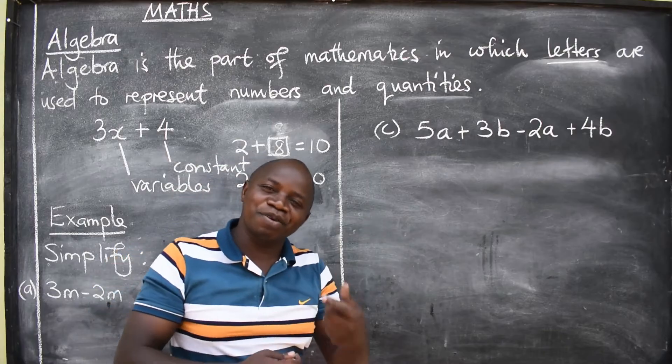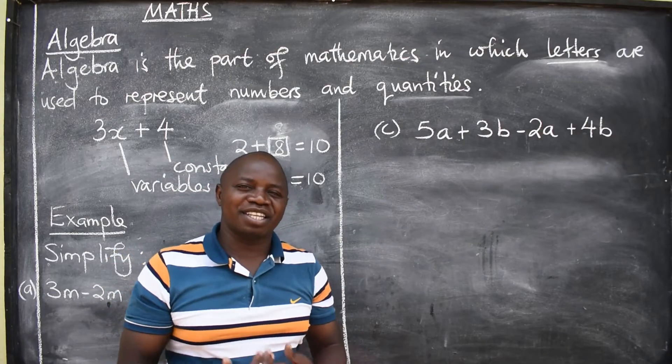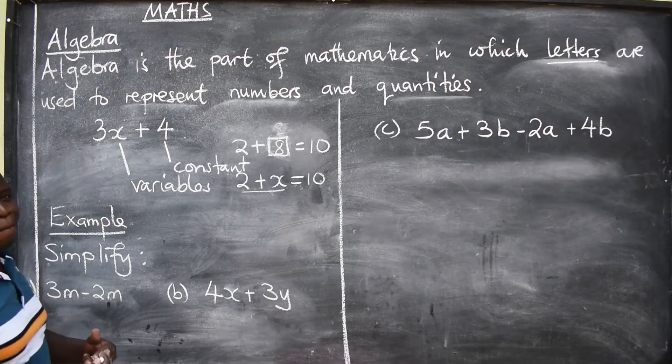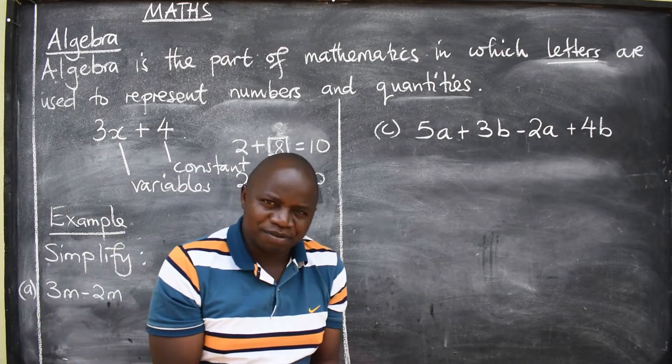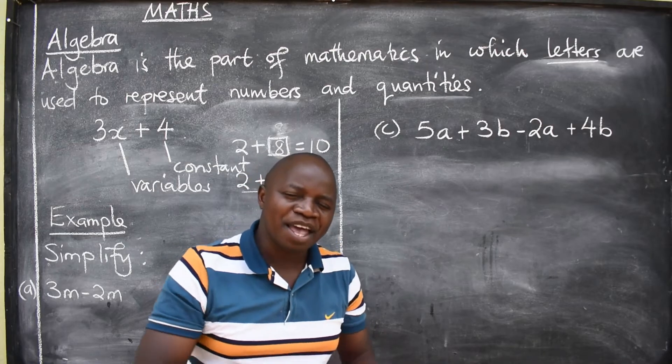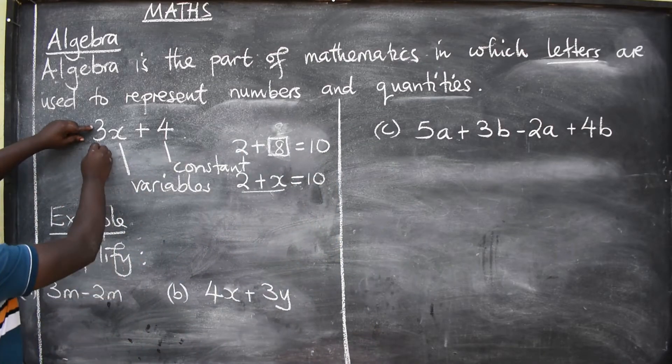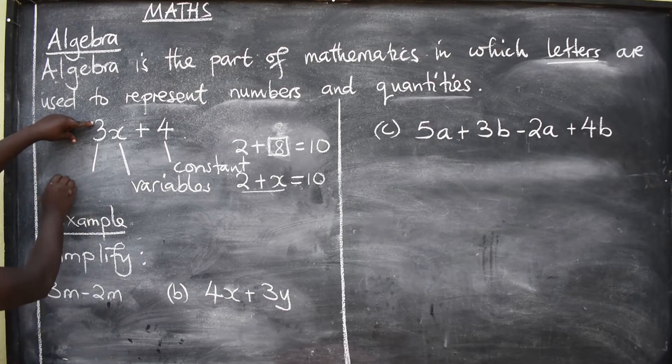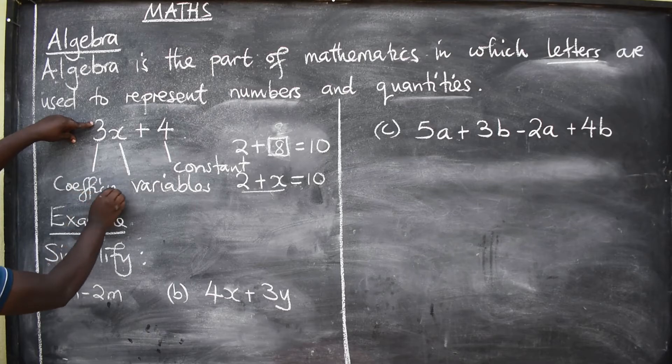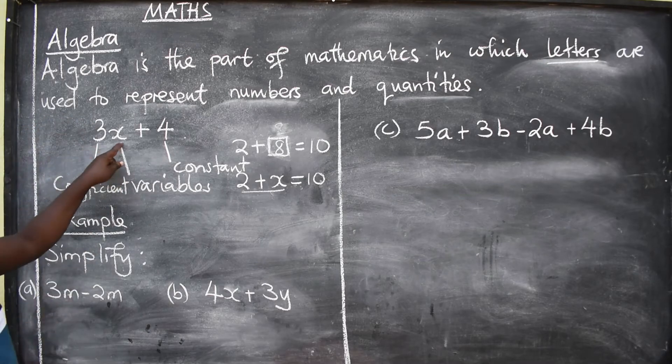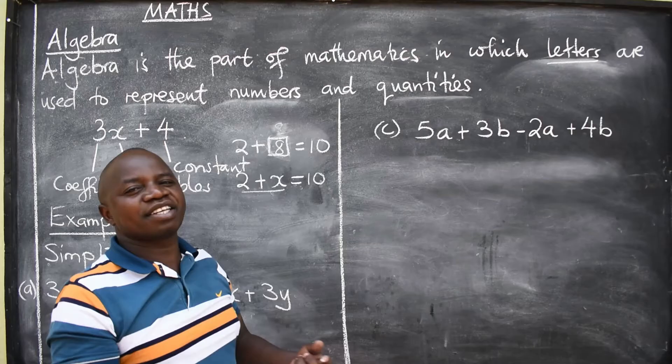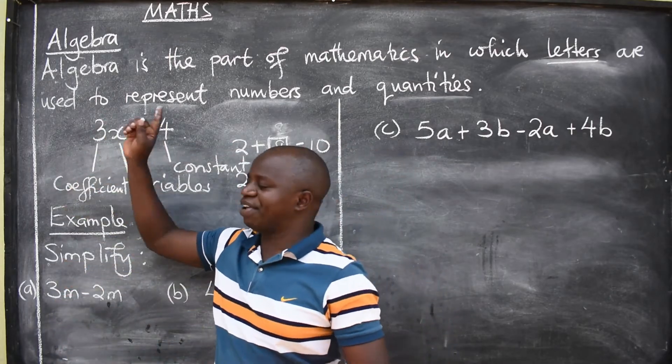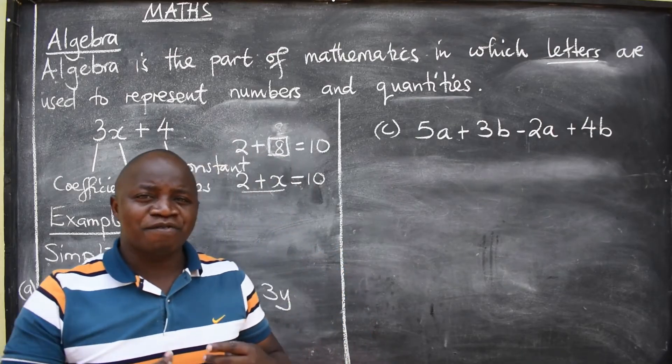So please understand these terms as I will be using them throughout the discussion. Then, any number in front of a variable, that number will be called - like the way 3 is here - that number will be called the coefficient. So here, when I say what's the coefficient of x, you will be able to tell me, okay, coefficient of x is 3.